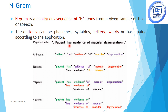In bigrams we take two words at a time: 'patient has', 'has evidence', 'evidence of', and so on. In trigrams we take three words at a time: 'patient has evidence', 'has evidence of', 'evidence of macular', 'of macular degeneration'. This is how n-grams work.